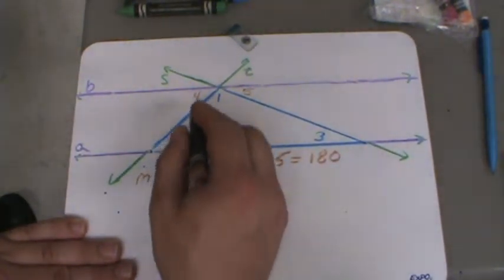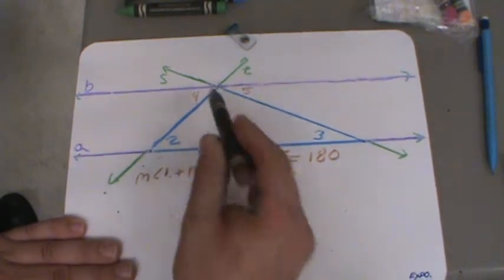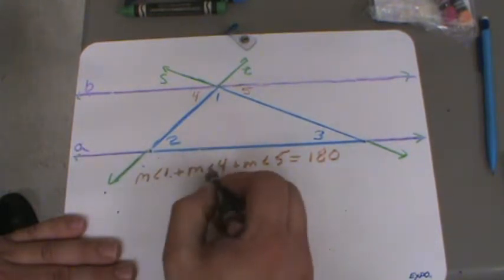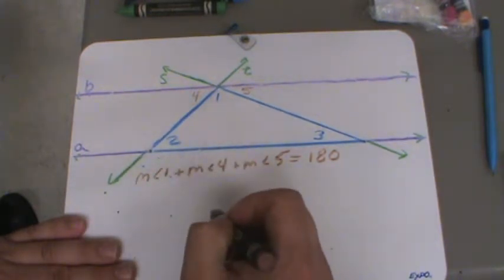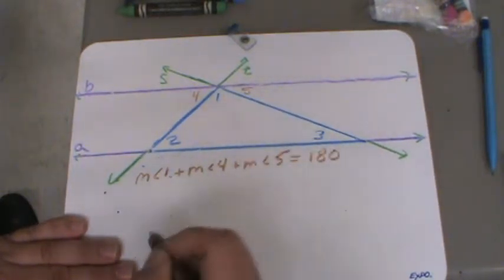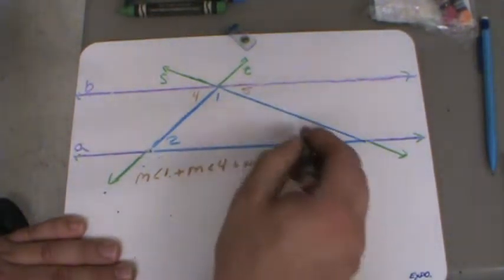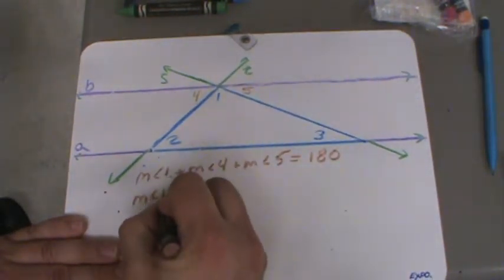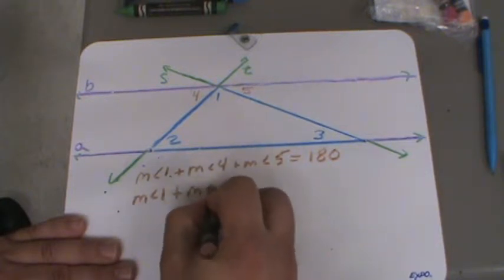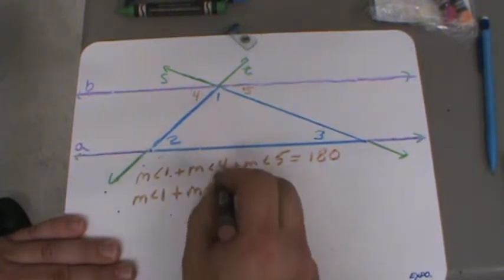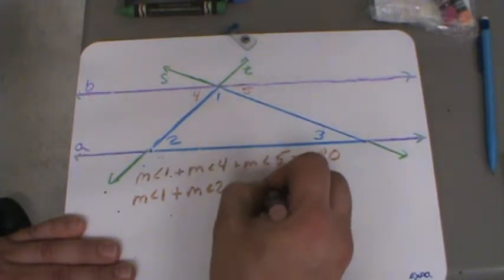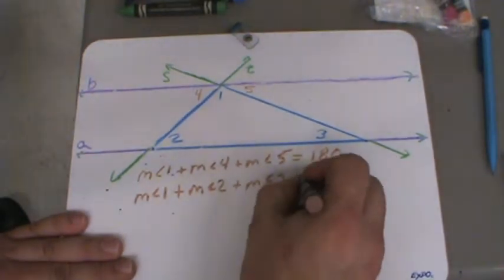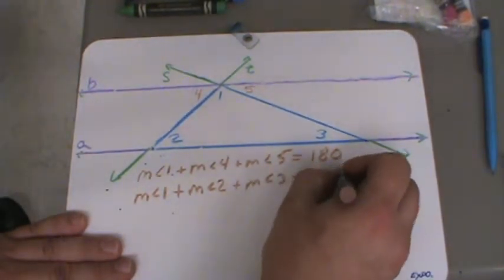We also know that angle 2 is equal to angle 4. So, we could replace angle 4 with the measure of angle 2. And we know that angle 5 is equal to angle 3. So, we could replace angle 5 with angle 3. If we do that, this becomes the measure of angle 1 plus the measure of angle 2, the same as measure of angle 4, plus the measure of angle 3, which is the same as the measure of angle 5, is going to equal 180 degrees.